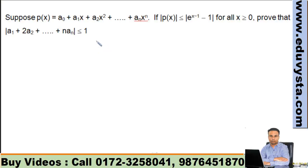You read this question. Suppose p(x) is equal to a₀ + a₁x + a₂x² + ... + aₙxⁿ. In fact, n degree polynomial hai. If modulus of p(x) is less than or equal to e^(x-1) - 1 for all x greater than or equal to 0, then prove that |a₁ + 2a₂ + ... + naₙ| is less than or equal to 1.